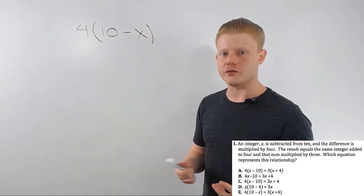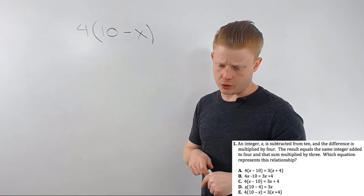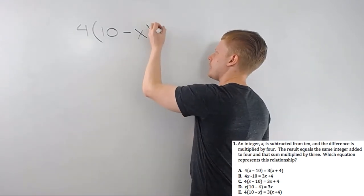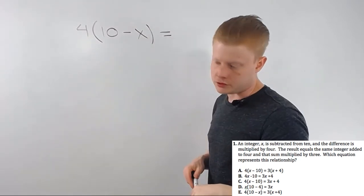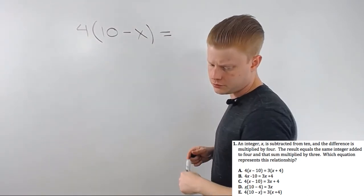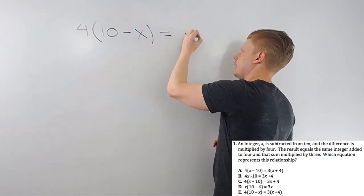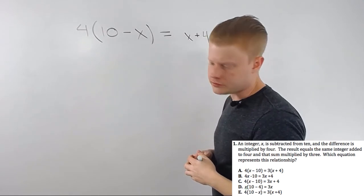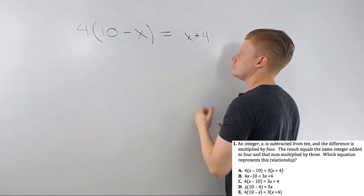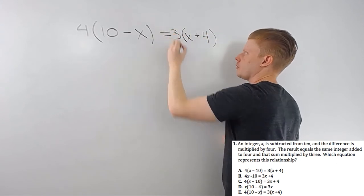Let's go ahead and finish this out just for practice. Okay. The result equals... Okay. Well, I can do that. Equals the same integer. That means it's x. Okay. x is added to 4. And I can just put that 4 wherever I want. And that sum, sum is the result of addition multiplied by 3.